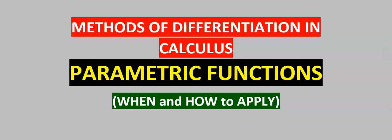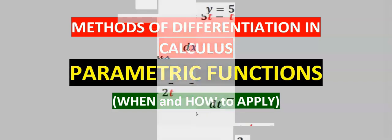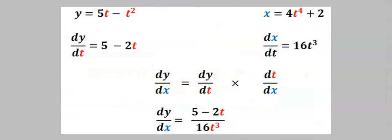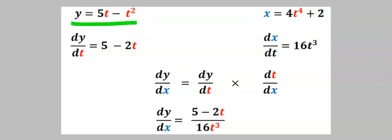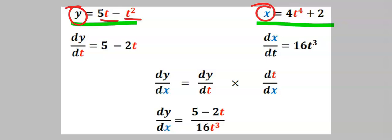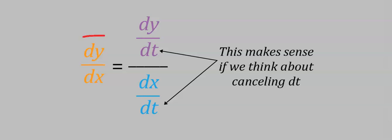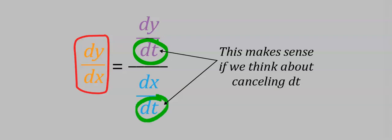In this video you will learn how to differentiate parametric functions. A parametric function is made up of two separate functions having three or more parameters. For example, in these two separate functions, one is a parameter, another is a parameter, and t is the common parameter seen in both functions. To find dy/dx in such an example, dt will need to cancel out.